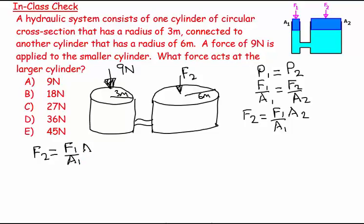So F2 is equal to F1 over A1 multiplied by A2, which equals - well, the force is 9 Newtons, and then the A2 area is pi times 6 squared, and the A1 area, this cross-sectional area, is pi times 3 squared.